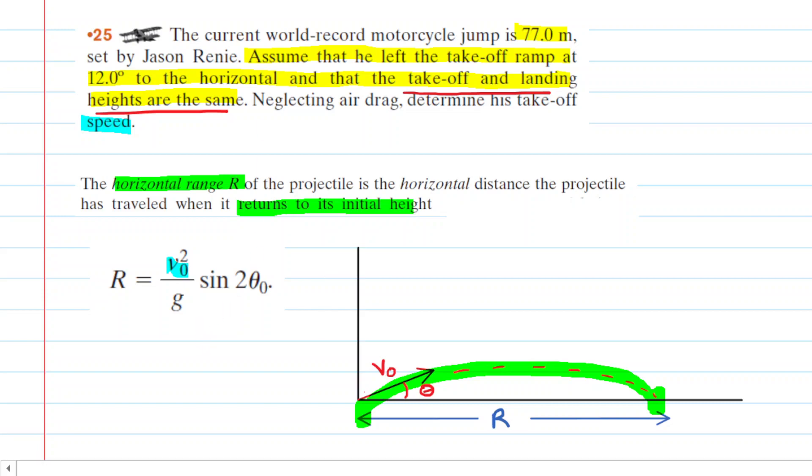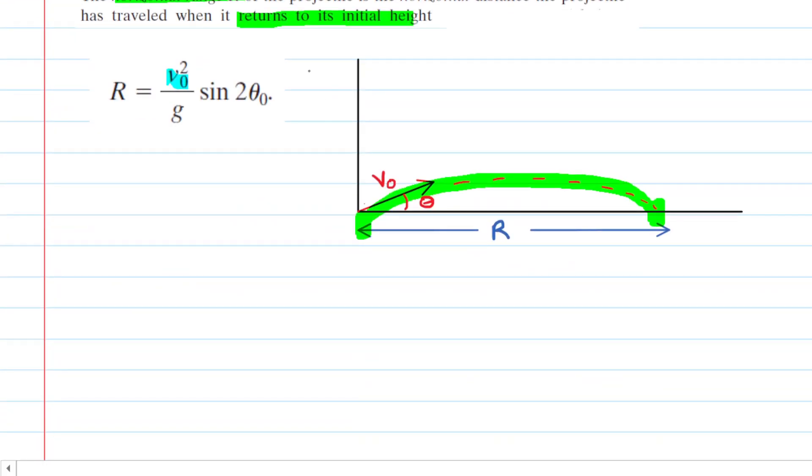Why don't we then try to solve that horizontal range equation for v-naught? And we can do that by first multiplying both sides of the equation by g so that we cancel the g out on the right hand side. We then will divide both sides of the equation by the term sine of two theta-naught.